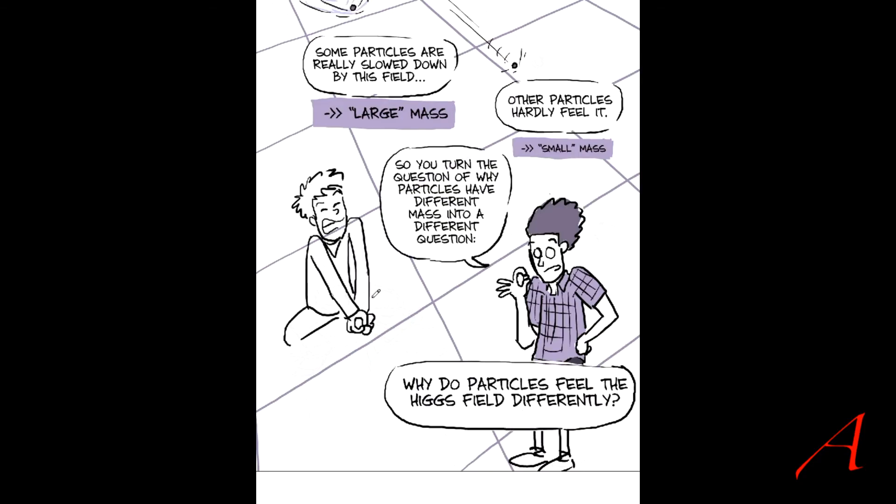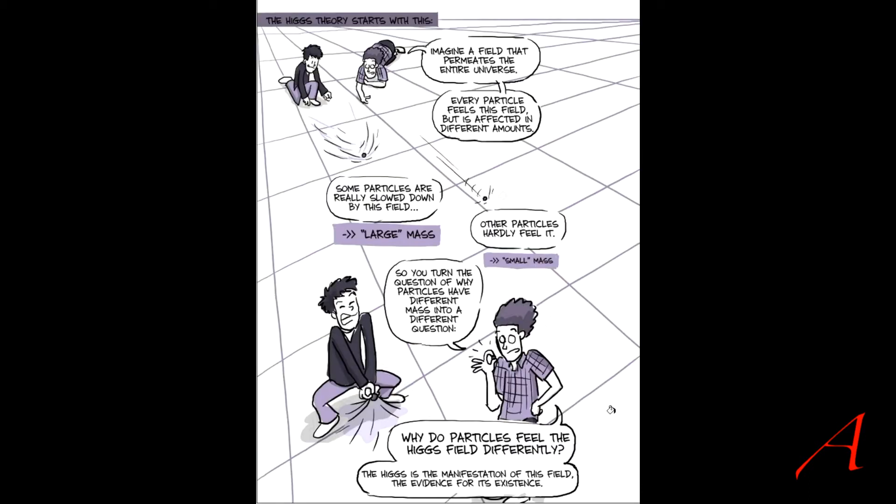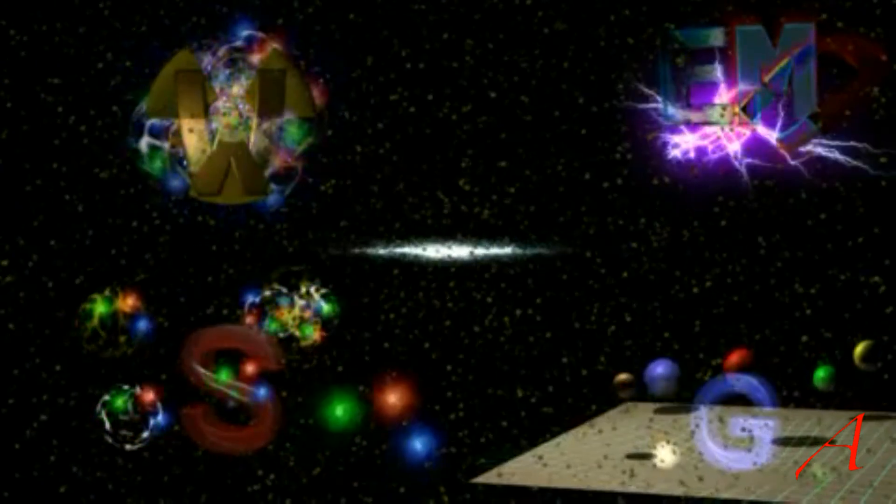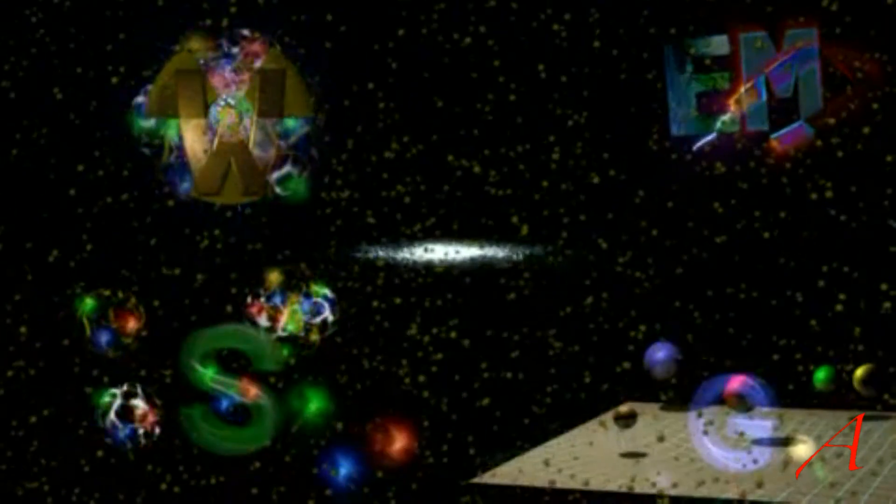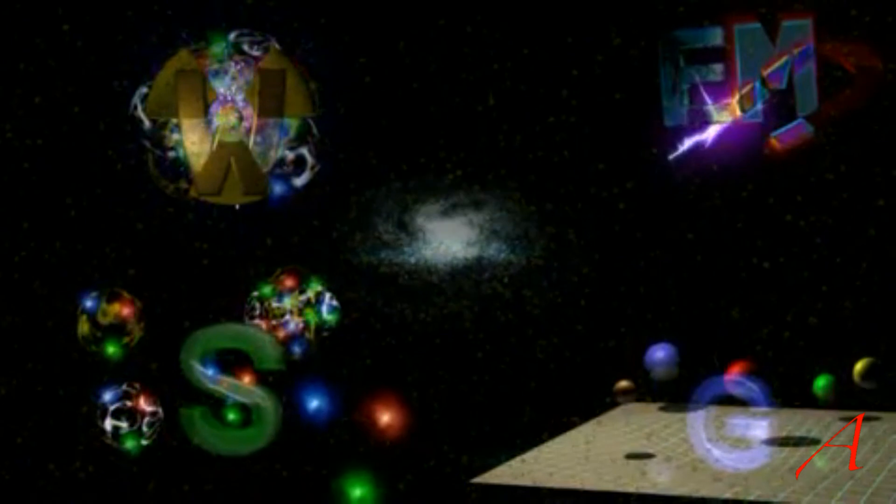Why do particles feel the Higgs field differently? But there is one manifestation of the field is the existence of this particle. It occupies space. It contains energy. Its presence eliminates the true vacuum.